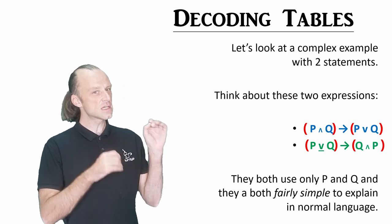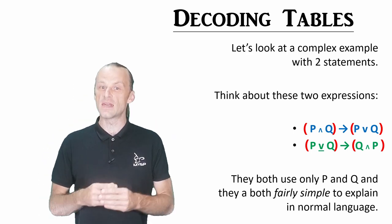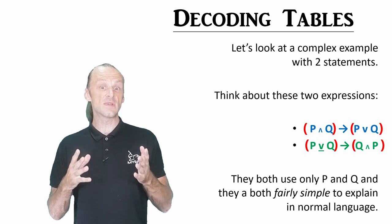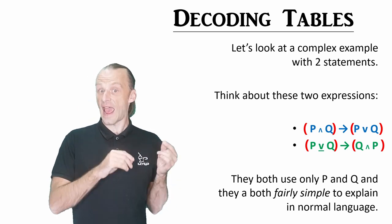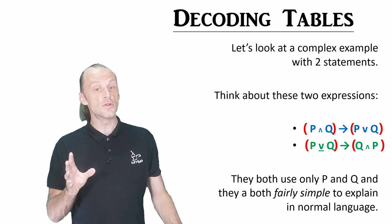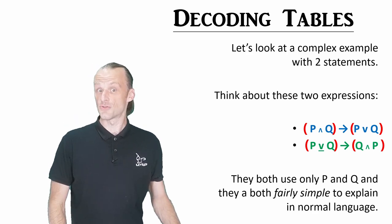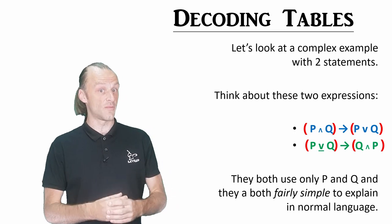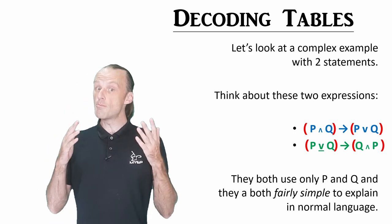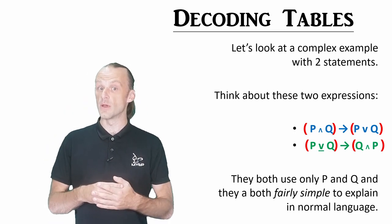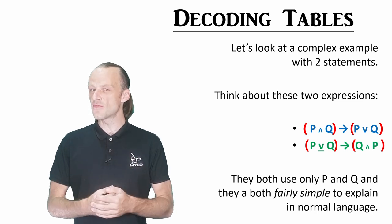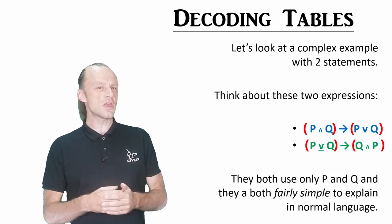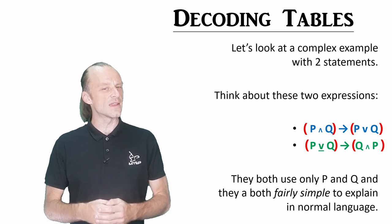These statements are still quite easy to explain in words. The first statement says that if both P and Q are true, then it's also true that at least one of them is true. The second statement says that if only one of P and Q is true, then both P and Q will be true. What do you think of those two statements? What do you think we will find when we look at the truth tables?